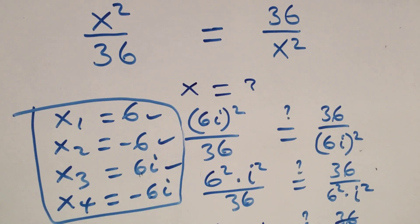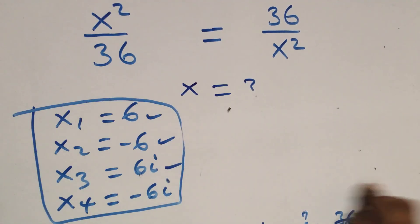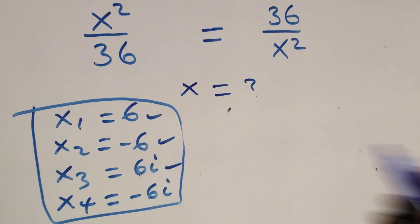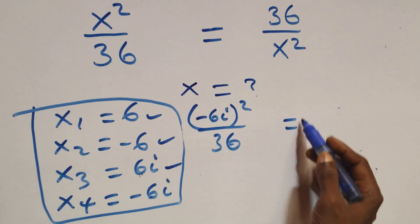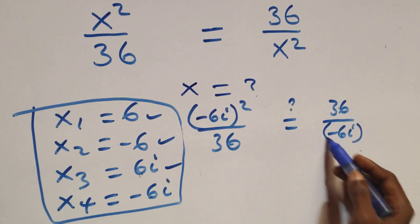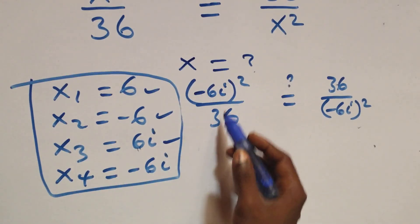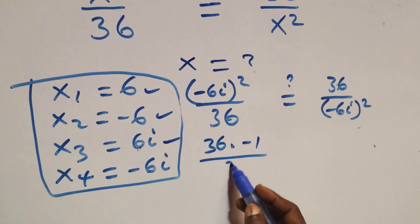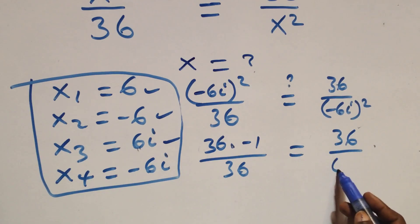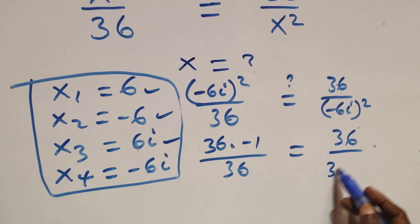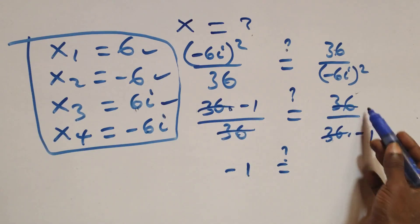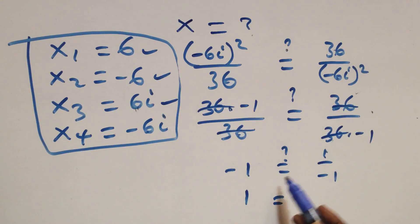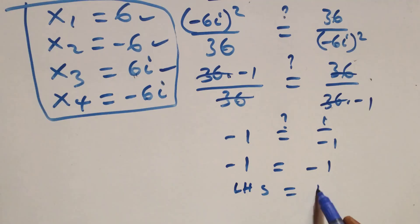Substituting x = −6i: the equation becomes (−6i)² over 36. Since (−6i)² = 36i² = 36(−1) = −36, the left side is −36/36 = −1. The right side is 36 over (−6i)² = 36/(−36) = 1/(−1) = −1. Left-hand side equals right-hand side.